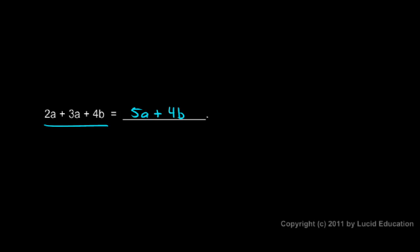So this 2a + 3a + 4b is equal to 5a + 4b, and being able to do that is very important. Being able to find and identify the like terms and combine them, that's a big deal.